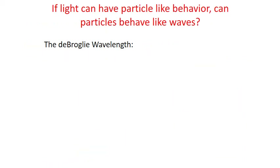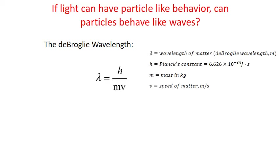The idea that matter could have wave-like properties was first proposed by Louis de Broglie, a French graduate student in physics, in his Ph.D. dissertation. He was building upon the work done by Einstein on the wave-particle nature of photons and proposed that this idea could be extended to matter as well. Using Einstein's equations, he further went on to provide his own mathematical equation that could be used to define the wavelength of motion of any particle. It's known as the de Broglie wavelength.